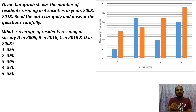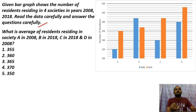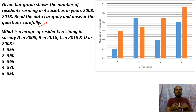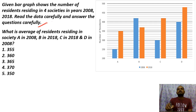If you look at the question in 30 seconds or 20 seconds, you can read it in just two lines. The data is mentioned, the total value is mentioned. The given bar graph shows the number of residents residing in four societies in 2008 and 2018. Read the information carefully and answer the questions. If you look at the chart types, this is a bar chart.